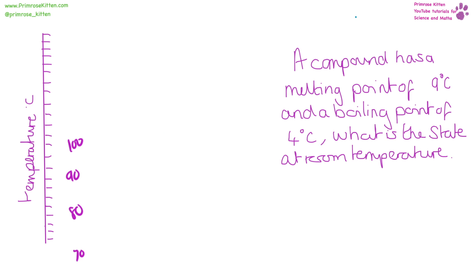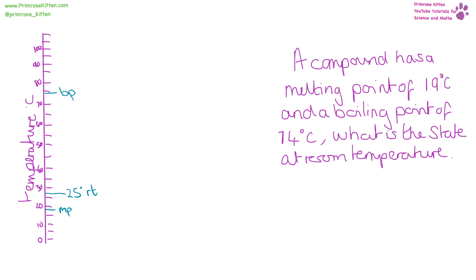A compound has a melting point of 19 degrees and a boiling point of 74 degrees. What is its state at room temperature? Room temperature is about 25 to 27 degrees. When it boils, it turns from a liquid into a gas, so above 74 it is going to be a gas. Below the boiling point it is a liquid, and below the melting point of 19 it is a solid. So at room temperature, it is going to be a liquid.